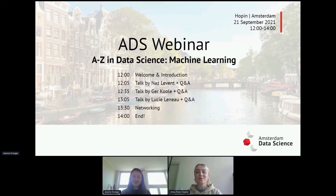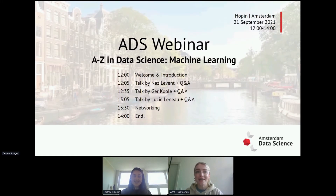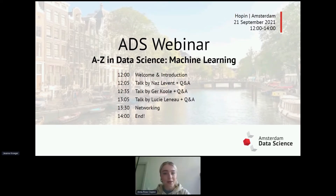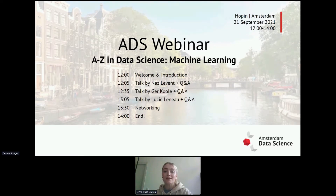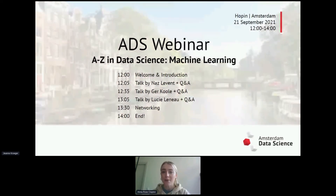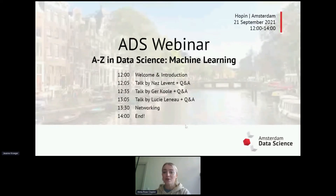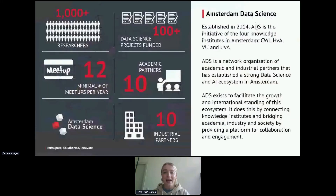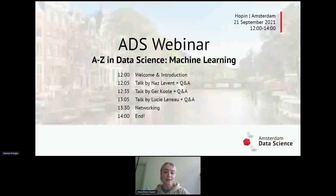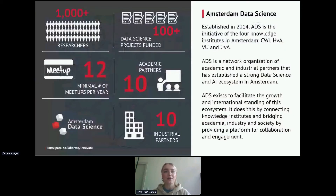Welcome everybody to today's webinar. We are very excited to host this webinar on machine learning. This is the third year in a row we are doing the A to Z data science webinar series, to showcase to new students where their career in data science and AI can take them. Today's event is in partnership with Sarvein Storm, two student associations at the University of Amsterdam. Today we'll be touching on machine learning, and I will give a small introduction of what we do at A to Z data science before introducing our first speaker.